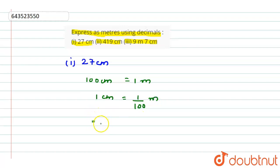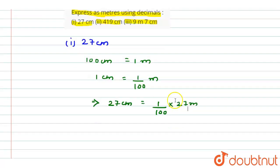So we have 27 cm is equal to 1 by 100 into 27 m. So from here, we will get 27 by 100 m, which is equal to 0.27 m. Our first answer is 0.27 m.